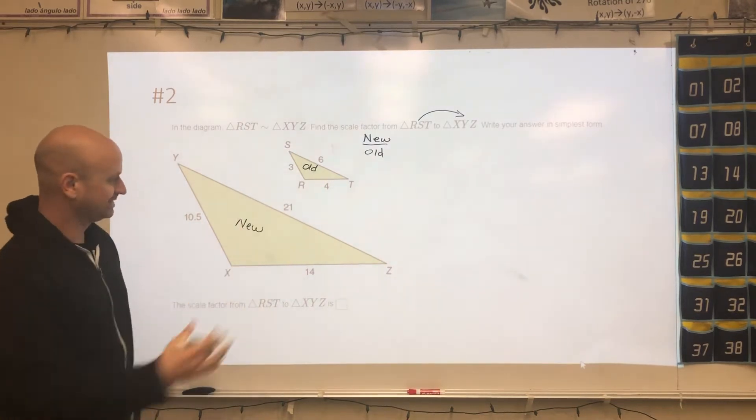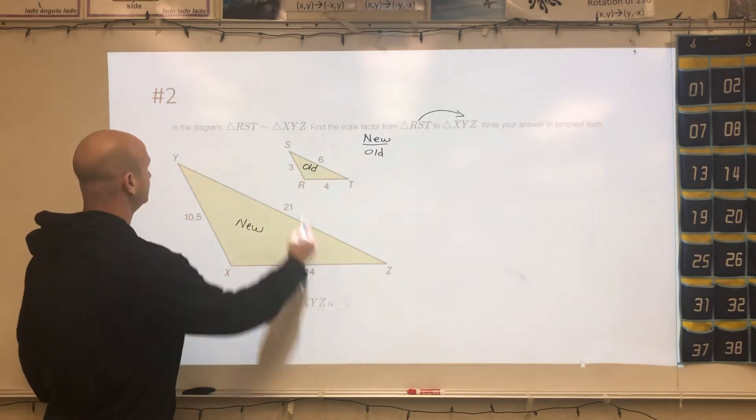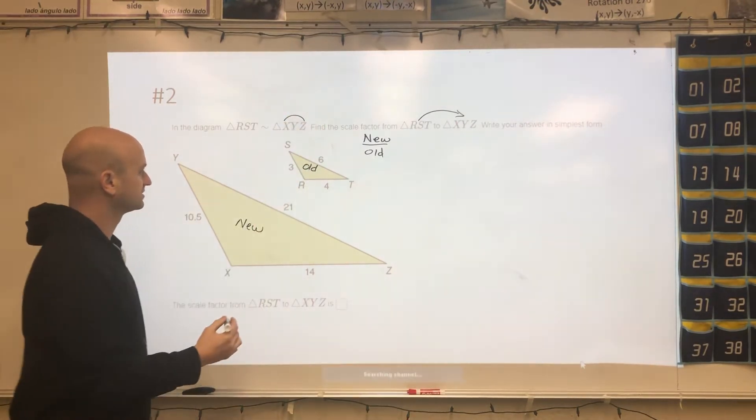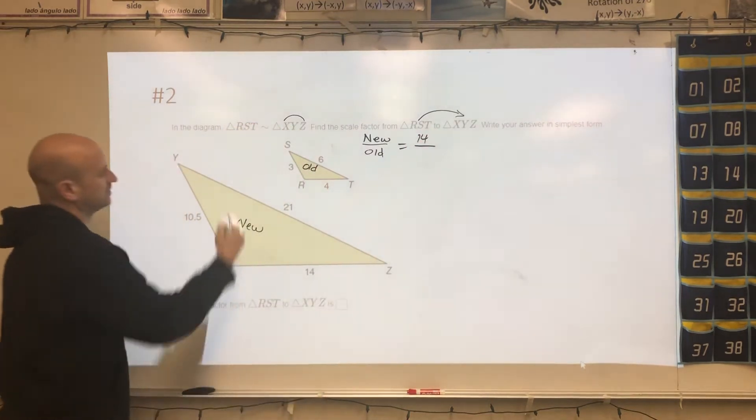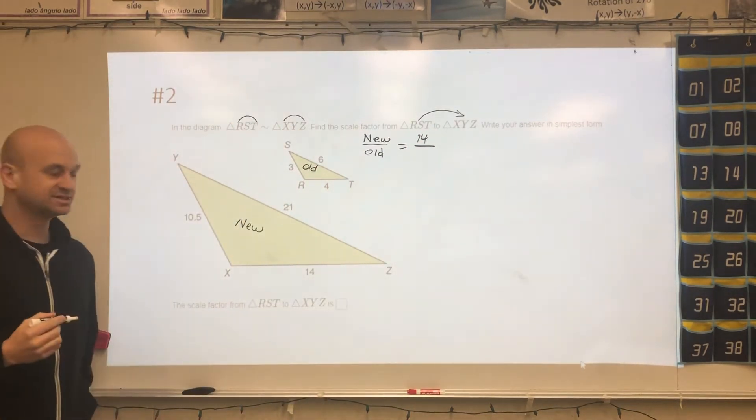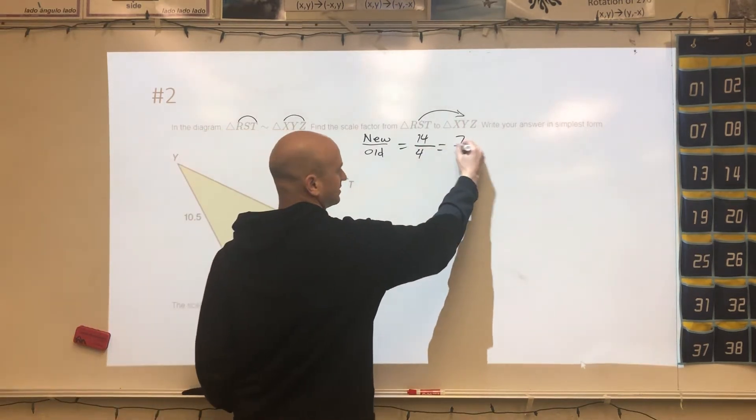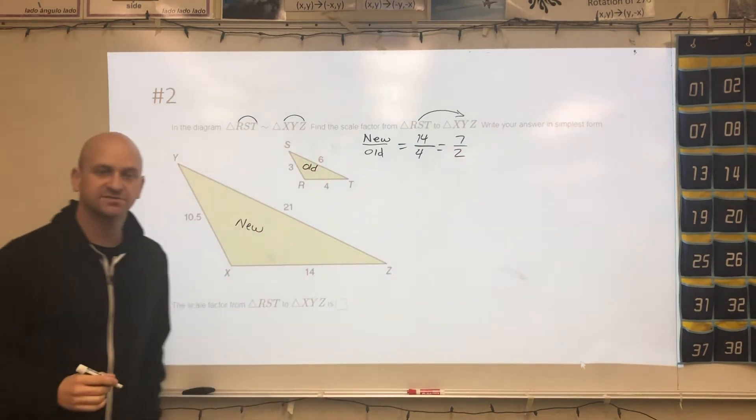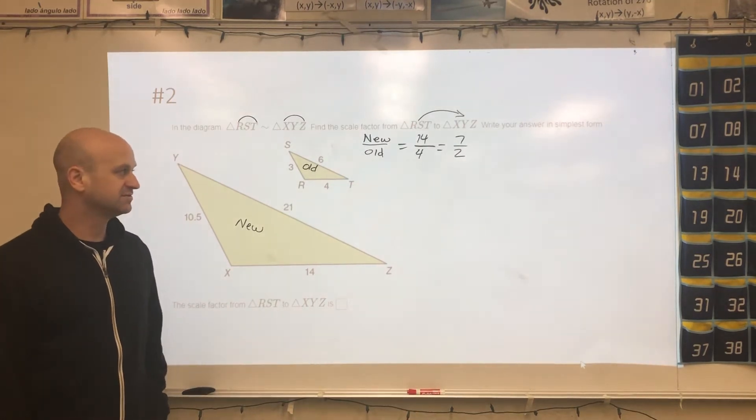So the new, you can pick any distance you want, any side length. I'll just pick XZ. So XZ is the first and the third, that's 14. XZ is going to go with RT, which is 4. So when I divide 14 by 4, I get 7 halves as my simplified fraction, and that would be your scale factor.